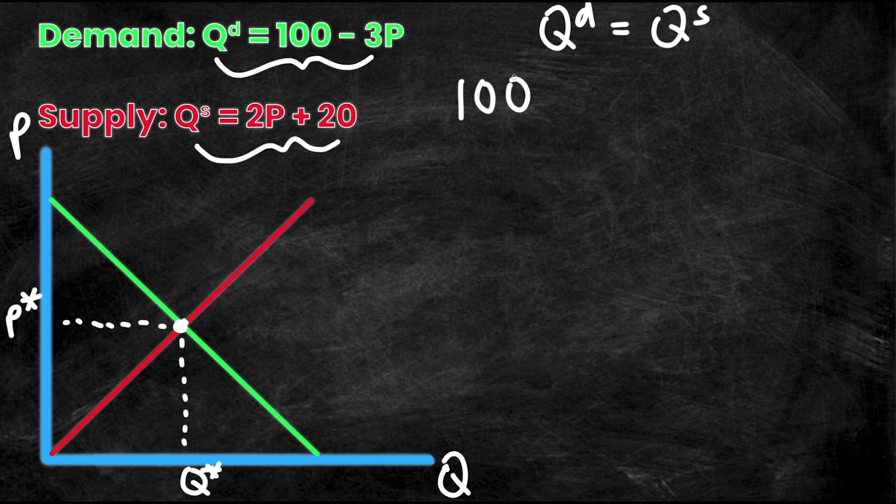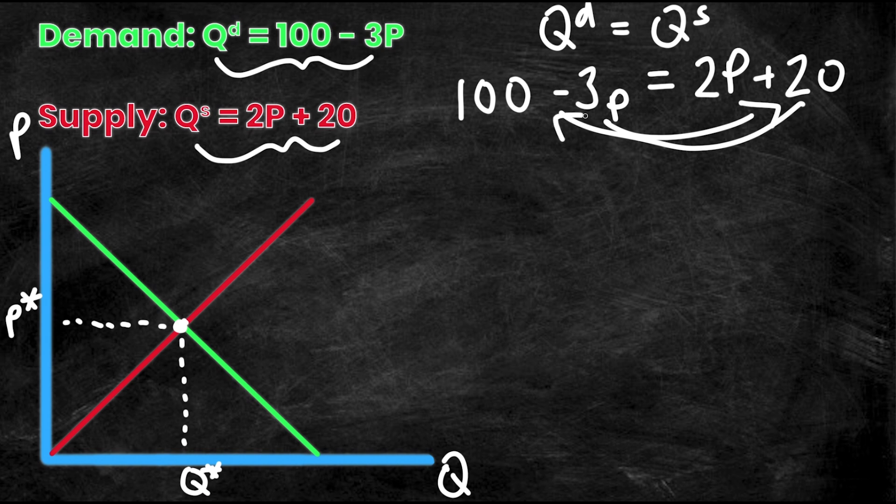So QD is equal to 100 minus 3P, which is equal to QS and QS is 2P plus 20. So now all I've done is set QD and QS equal to one another. Now you'll notice I have one equation and one unknown. So I can solve for P by rearranging this equation. So I'm going to move the 3P to this side of the equal sign. I'm going to move the 20 to this side of the equal sign, and I'm going to rearrange to get 100 minus 20 equals 2P plus 3P. Now again, you guys know this stuff. When I switch sides of the equal sign, I must switch the sign.